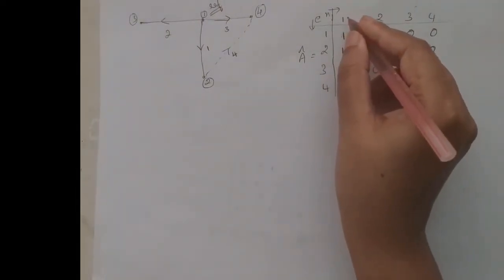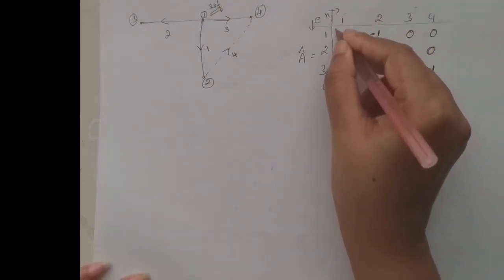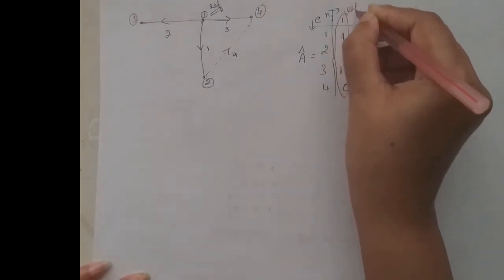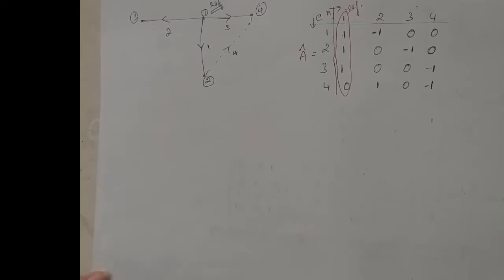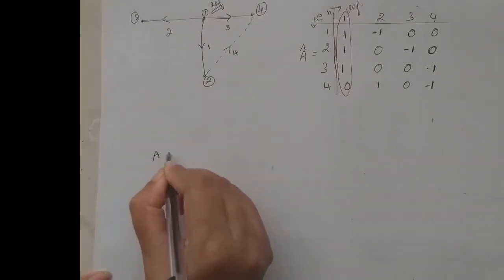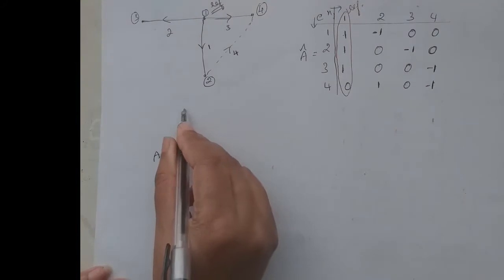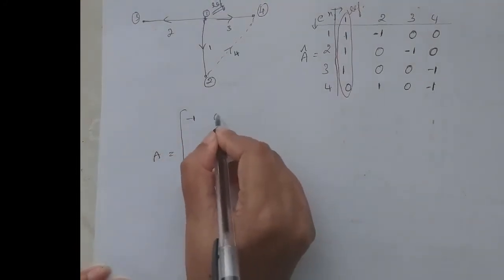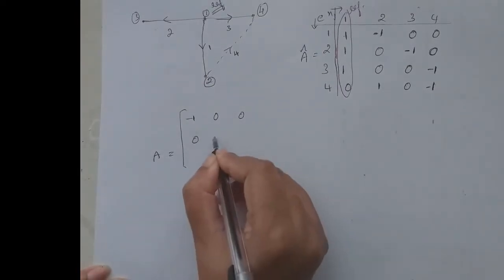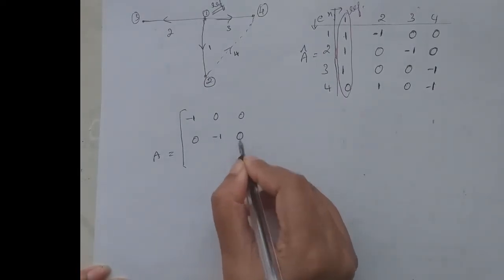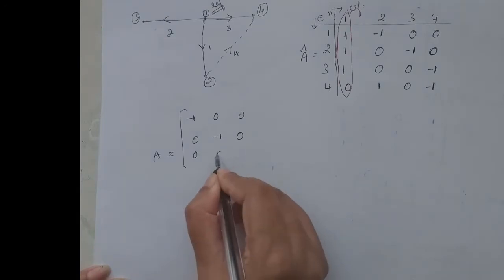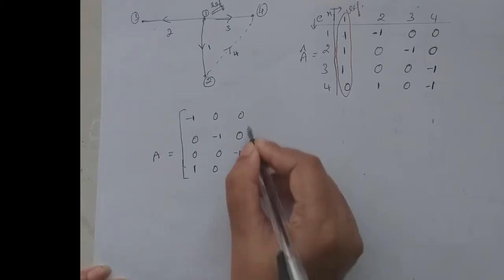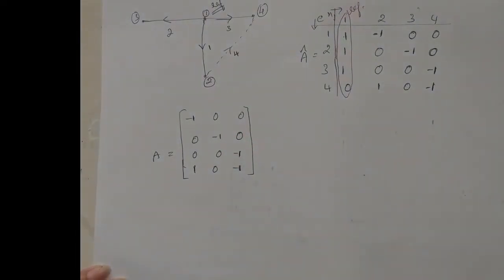From the element-node incidence matrix, we delete the column corresponding to the reference node to get the bus incidence matrix. This gives us matrix A with values: minus one, zero, zero; zero, minus one, zero; zero, zero, minus one; one, zero, minus one. This is the bus incidence matrix A.